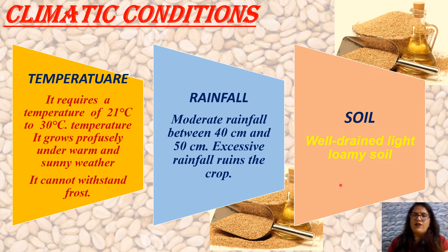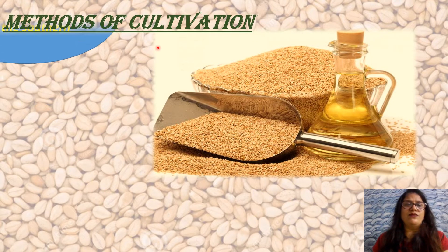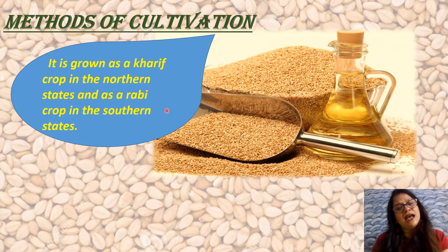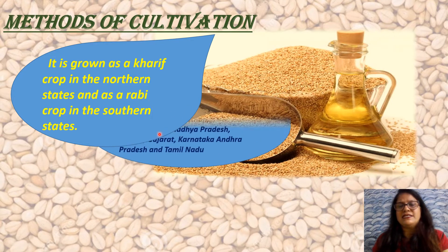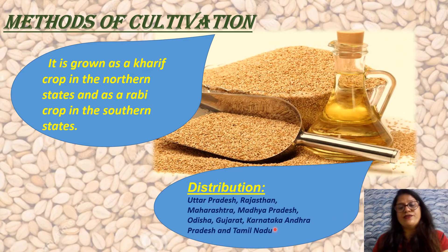Soil: well-drained light loamy soil is preferred for sesame cultivation. Methods of cultivation: it is grown as a Kharif crop in the northern states and as a Rabi crop in the southern states. Distribution: Uttar Pradesh, Rajasthan, Maharashtra, Madhya Pradesh, Orissa, Gujarat, Karnataka, Andhra Pradesh, and Tamil Nadu are major producing areas.